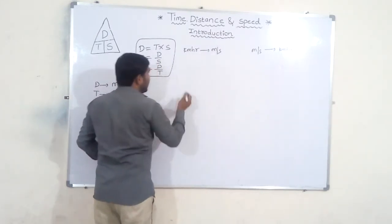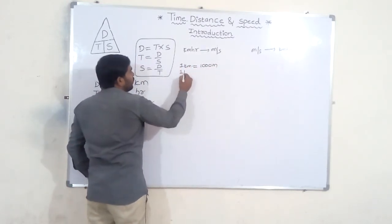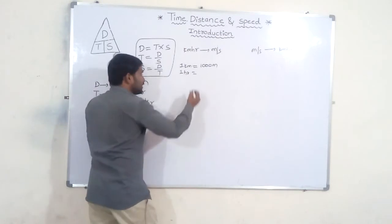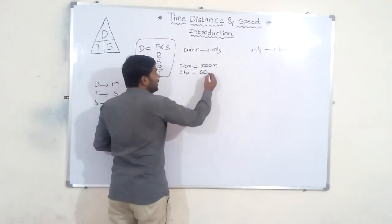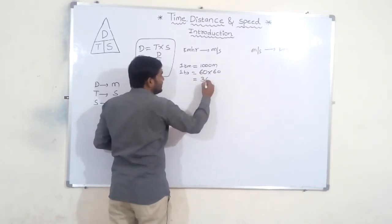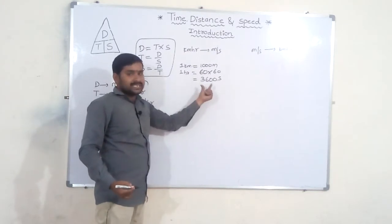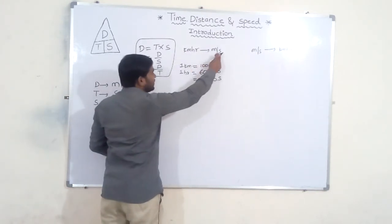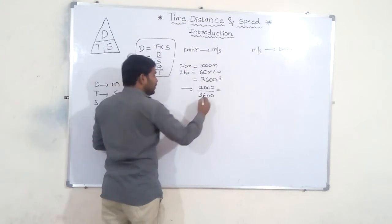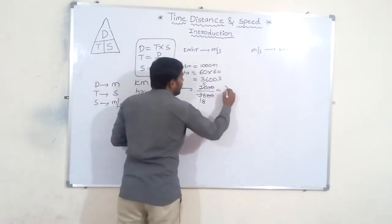To convert km per hour to meters per second: 1 km equals 1000 meters. 1 hour equals 60 minutes, 1 minute equals 60 seconds, so 1 hour equals 3600 seconds. Therefore, 1 km/h equals 1000 by 3600, which simplifies to 5 by 18.